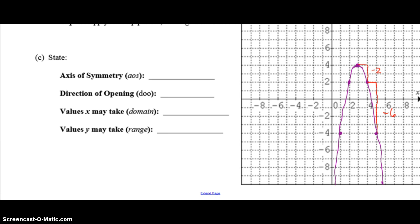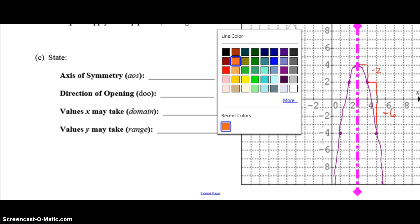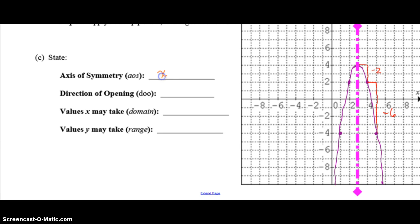So remember that the axis of symmetry is the vertical line that passes through the vertex of the parabola. So your axis of symmetry is at x equals 3. Vertical lines always start with x equals, and it's 3 because that's where it crosses the x-axis. So this is your axis of symmetry, x equals 3. The direction of opening is down, because if this was like a bowl, it would be opened down.